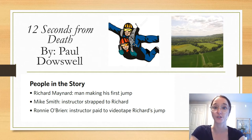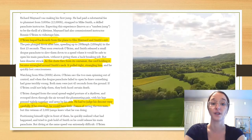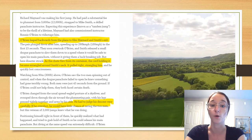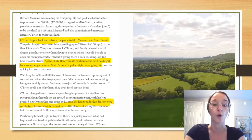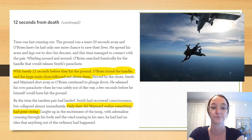Welcome back. You might remember that this is a story about three skydivers whose jump almost ends in disaster. The three main characters are Richard Maynard, the man making his first jump; Mike Smith, the instructor strapped to Richard; and Ronnie O'Brien, the instructor paid to videotape Richard's jump. O'Brien leaped backward from the plane to film Maynard and Smith's exit. As the parachute flew from its container, the cord holding it became entangled around Smith's neck — it pulled tight, strangling him, and he quickly lost consciousness. O'Brien had to judge his descent very carefully; if he overshot, he would have little chance of saving the two men. With barely 12 seconds before they hit the ground, O'Brien found the handle and the large main chute billowed out above them. Only when the pair had landed did Maynard realize that something had gone wrong.